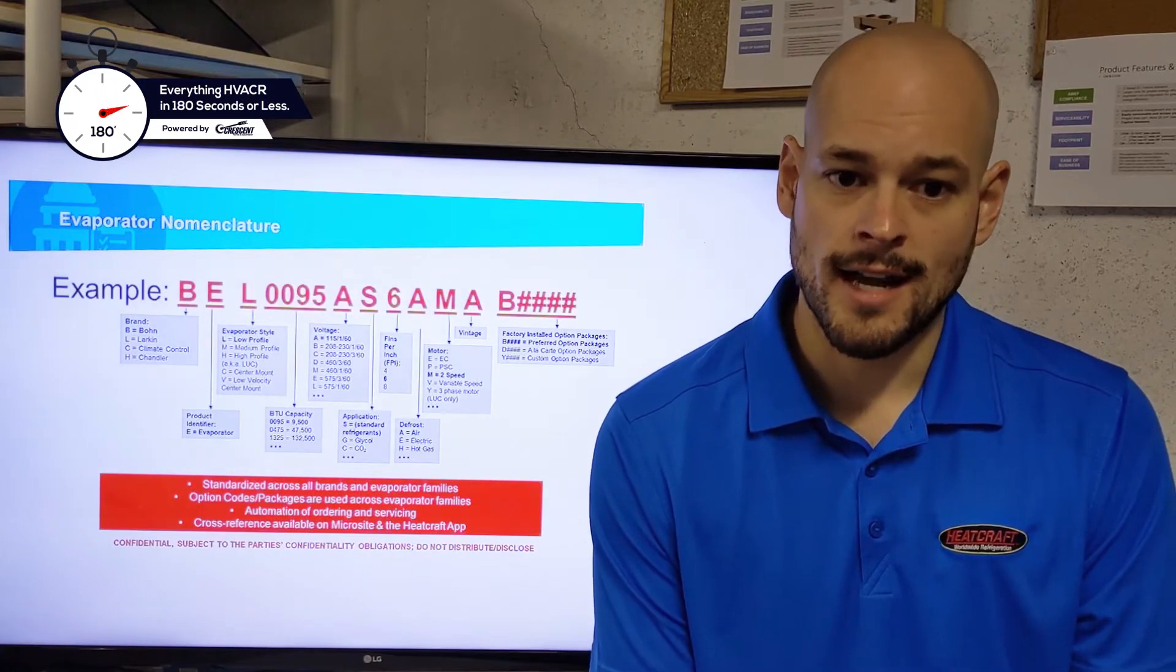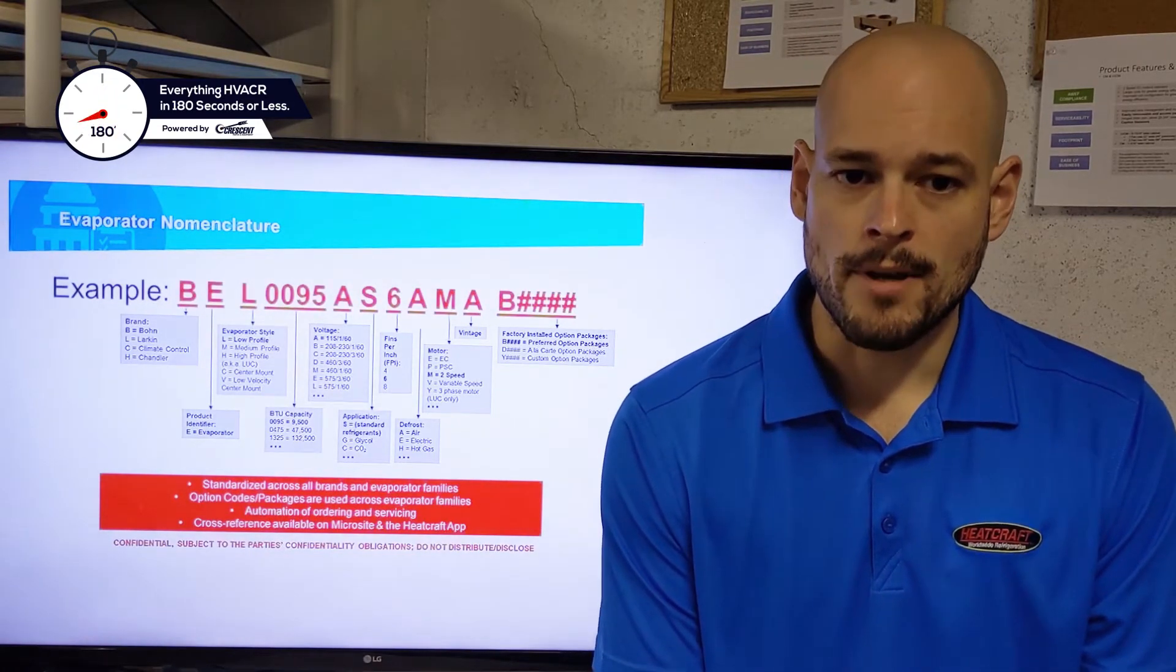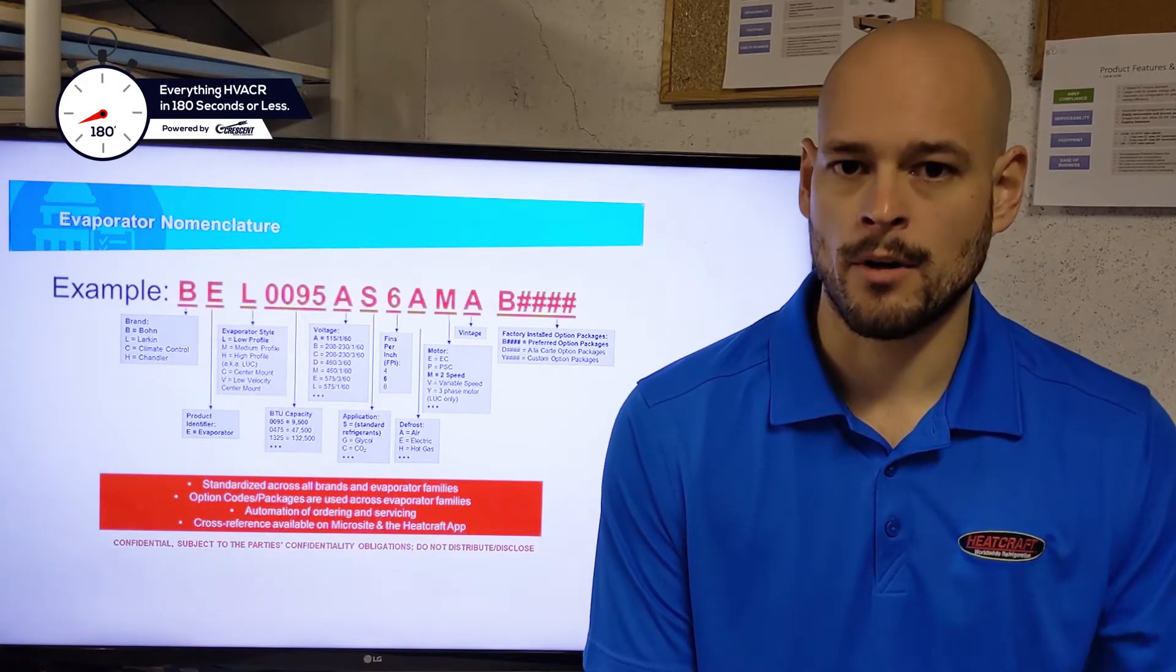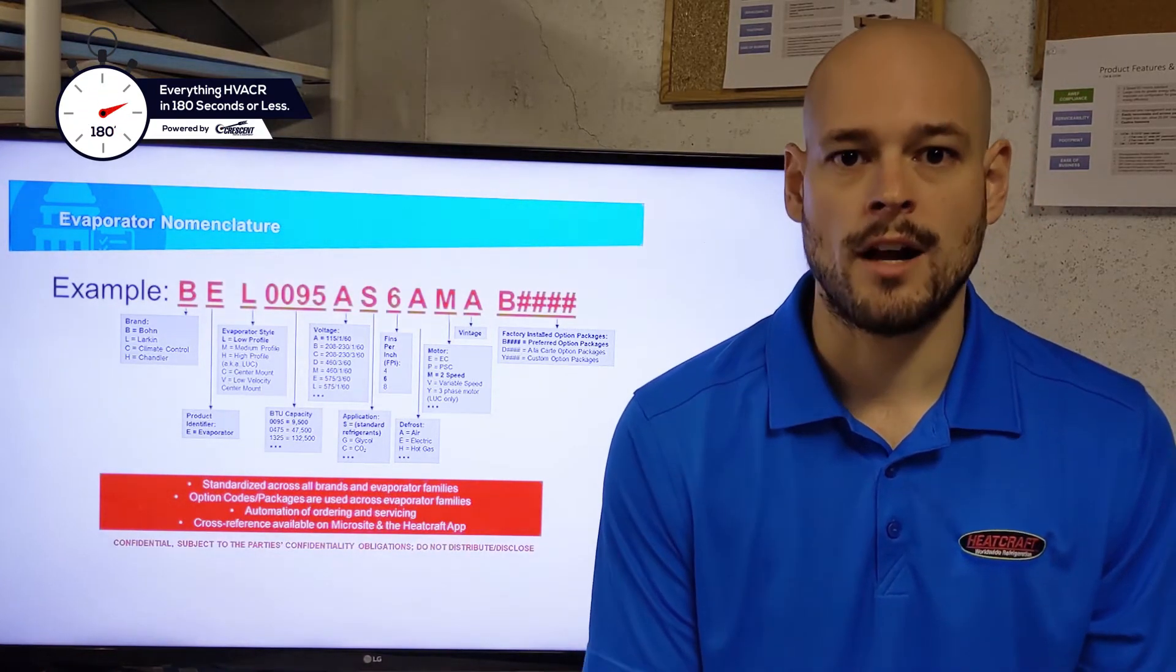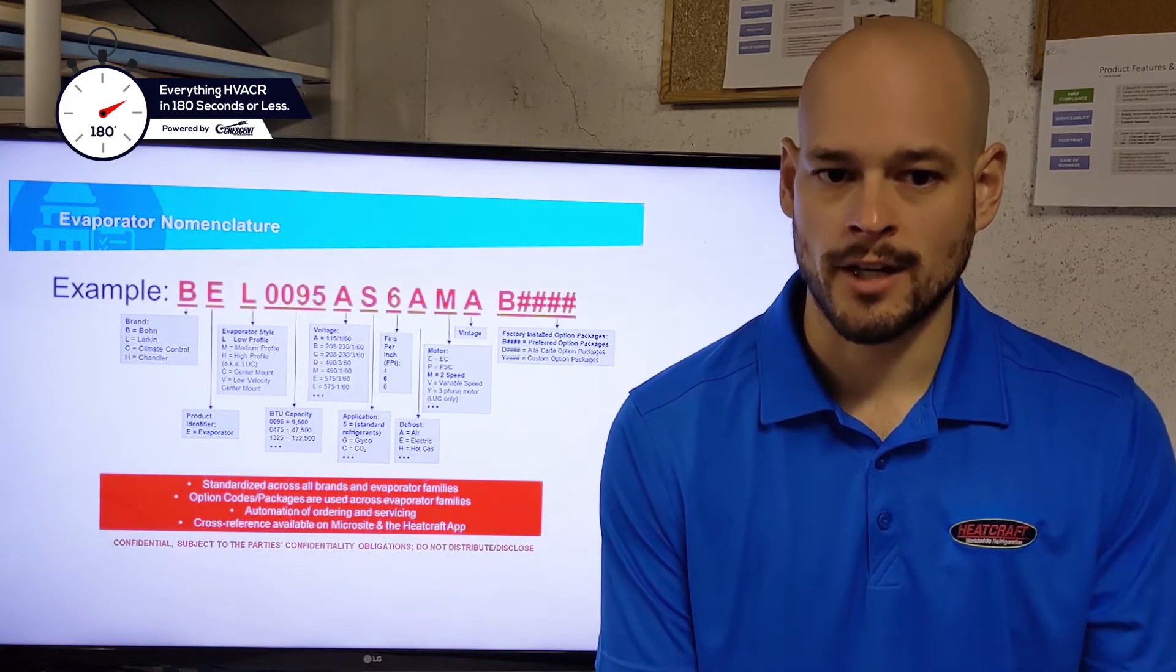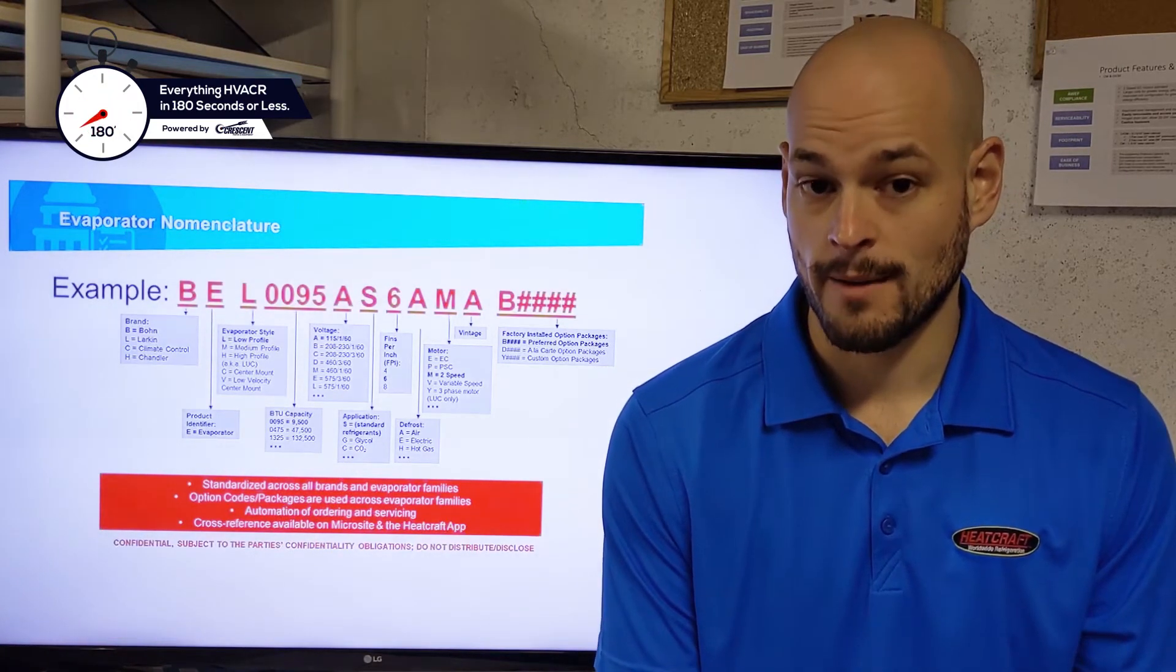Now your next digits are going to indicate your nominal capacity. Be sure you're not just going by that number. Be sure you're taking your model number and going to the technical guide, going to the hub, or going to the cross-reference tool, determining your refrigerant, and then looking at your application capacity for that piece of equipment.